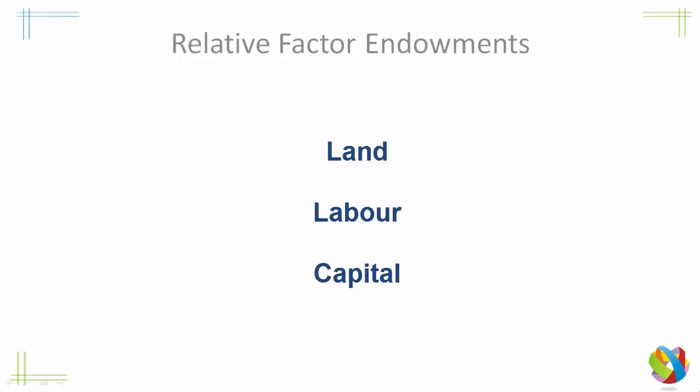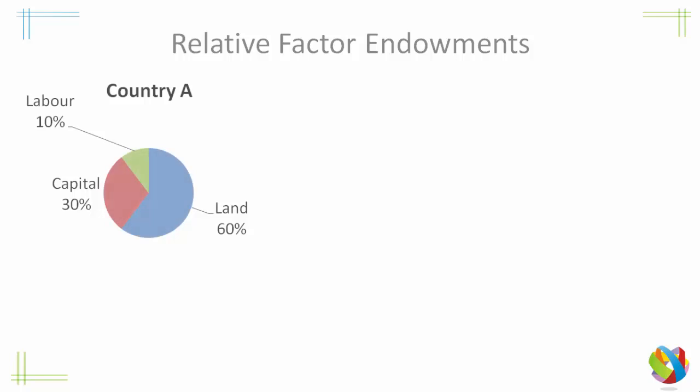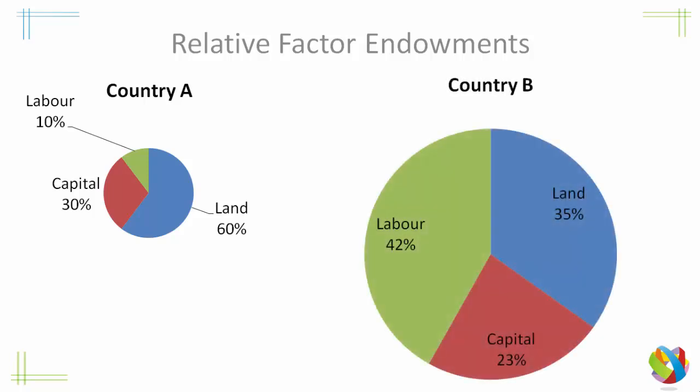Let's have a look at two fictional countries to explain it. We have Country A, a quite small country that has a lot of land, quite a lot of capital, and not much labour. Country B, well, these things are a bit more evenly divided up, but it has more labour than the other two factors.